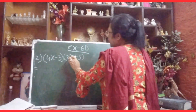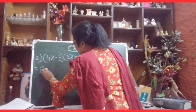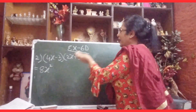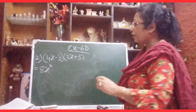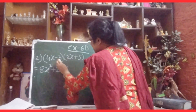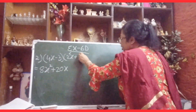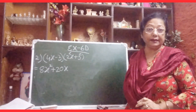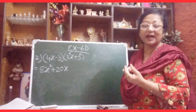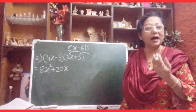We start with 4x into 2x: 4 times 2 is 8, x times x is x squared, giving 8x squared. Then 4x into 5 gives plus 20x. Now we multiply minus 3 with 2x: minus 3 times 2x gives minus 6x.